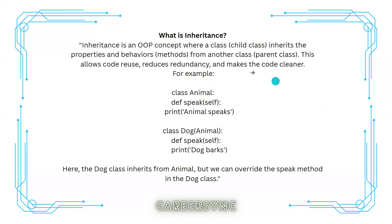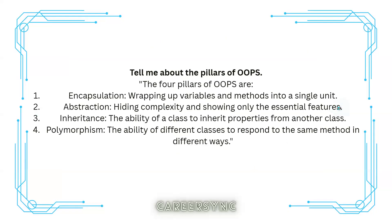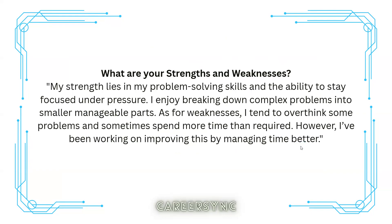The next question was: what is inheritance? Inheritance is an OOPs concept where a class inherits properties and behaviors from another class. It helps reuse code, reduce redundancy, and make the code cleaner. For example, a Dog class can be inherited from an Animal class. Now, for the main pillars of OOPs — encapsulation, abstraction, inheritance, and polymorphism — these are the four main pillars. This question has been asked to every student who gave the Cognizant interview, so you should work on it.